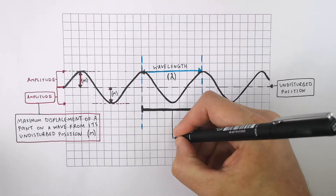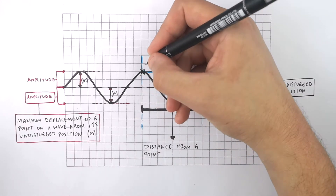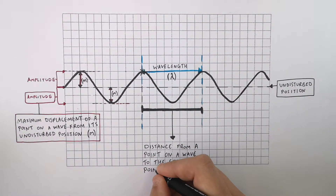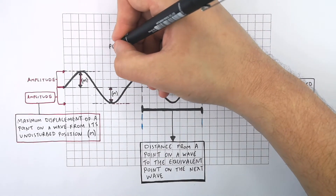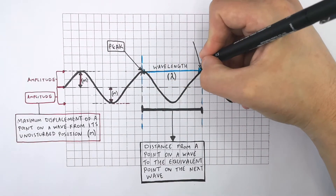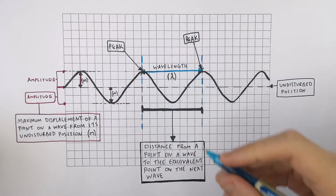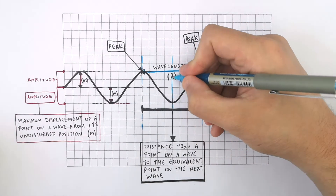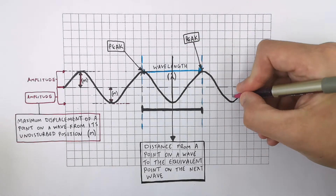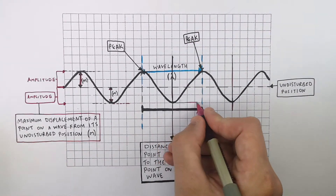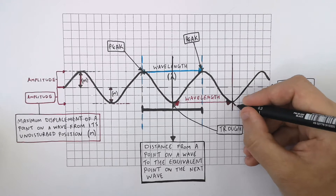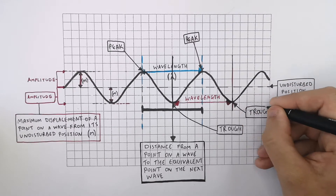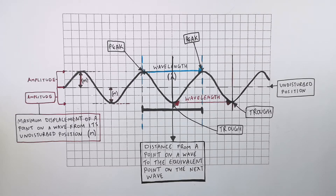The wavelength of a wave is the distance from a point on a wave to the equivalent point on the next wave. I've drawn the wavelength from one peak to the next peak of the wave. However, I can also measure a wavelength from the trough of one point on the wave to the next trough of the wave — so that is one wavelength. Wavelength is measured in meters and is represented by an upside-down y called lambda.